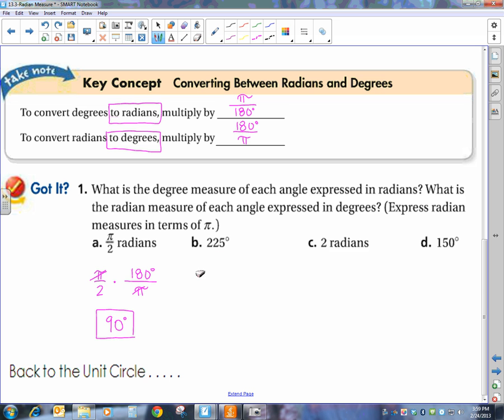Now, they gave us 225 degrees, and we want to go to radians. That means I want to get rid of my degrees. So my degrees has to be on the bottom, and π will be on top. So we're looking for a number that goes into both 225 over 180. Most calculators will do it for you. I believe 45 degrees goes into both. And so we get a final answer of 5π over 4.